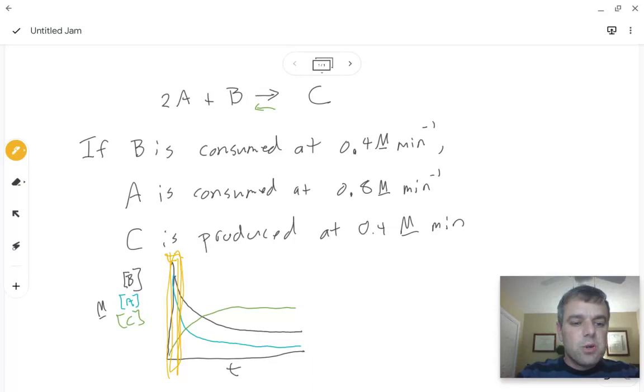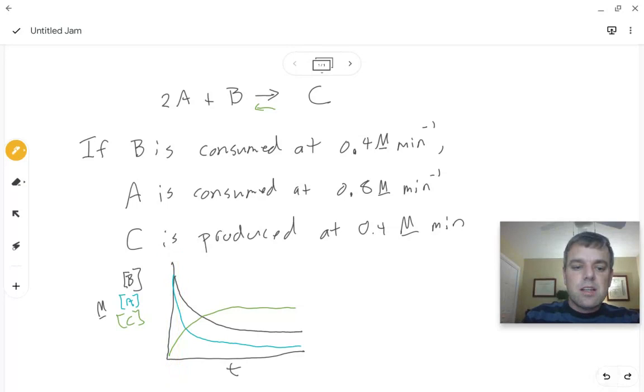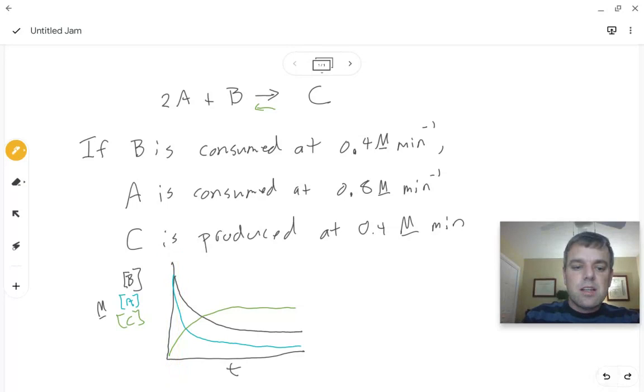If we just focus on this little section right here because there is no C present at the beginning for us to worry about it. So that's where we typically use what's called a method of initial rates. Now, tomorrow we will talk a lot more about what all of this means.